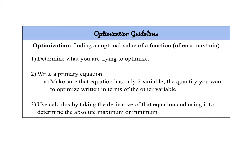Today we're going to talk about optimization, which is finding the optimal value of a function. Many times this will occur at a maximum or minimum, which is what we've been focusing on — how to find that relative max or min. As we go through these problems, you always want to first determine what you're trying to optimize. Then you'll need to write a primary equation with only two variables: one being the quantity to optimize and one additional variable. From there, we use calculus and first derivative analysis to find the maximum or minimum values.